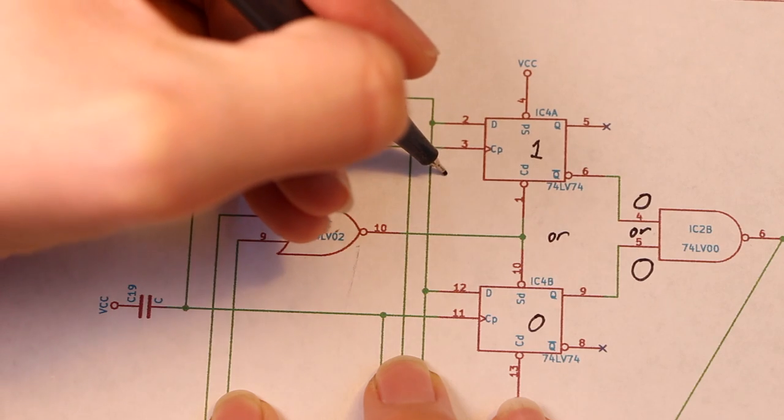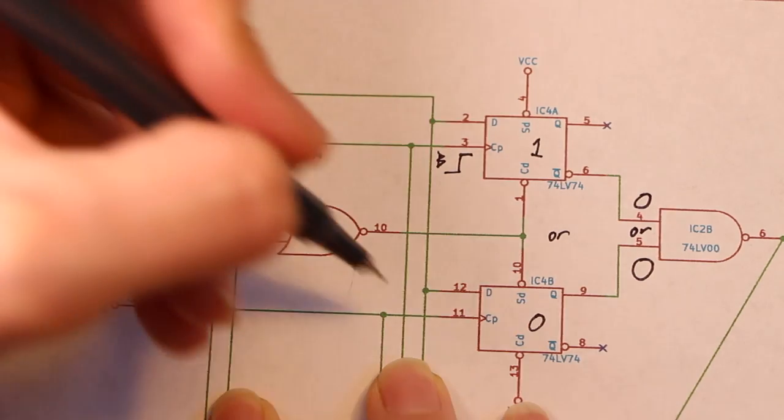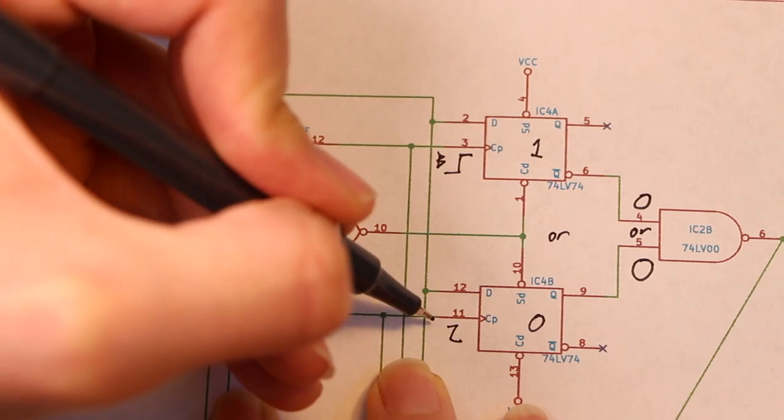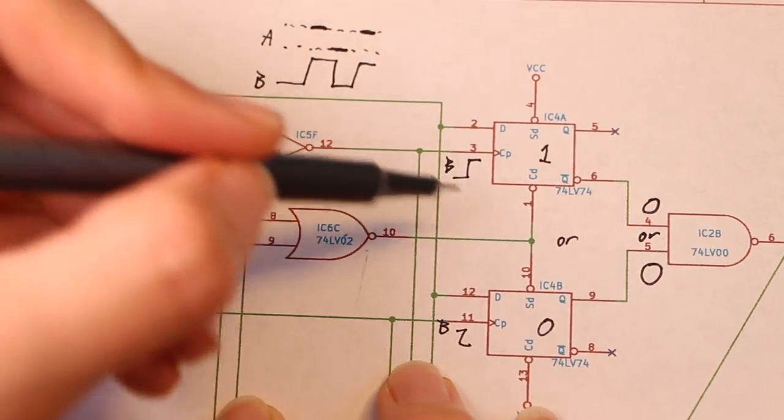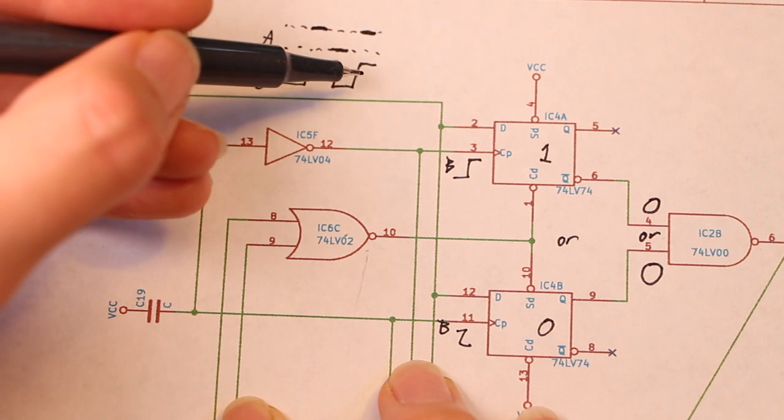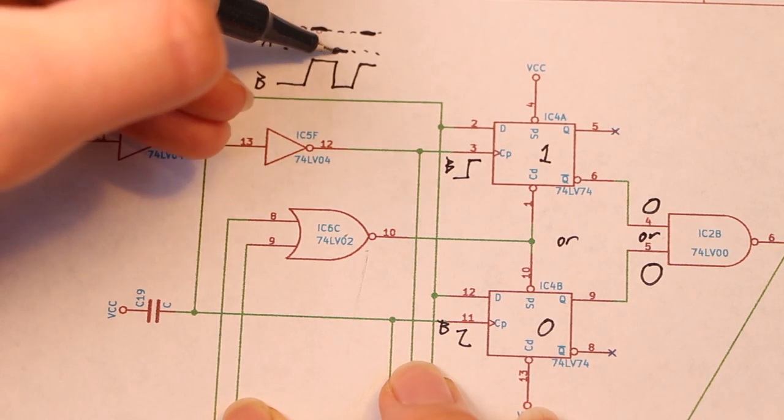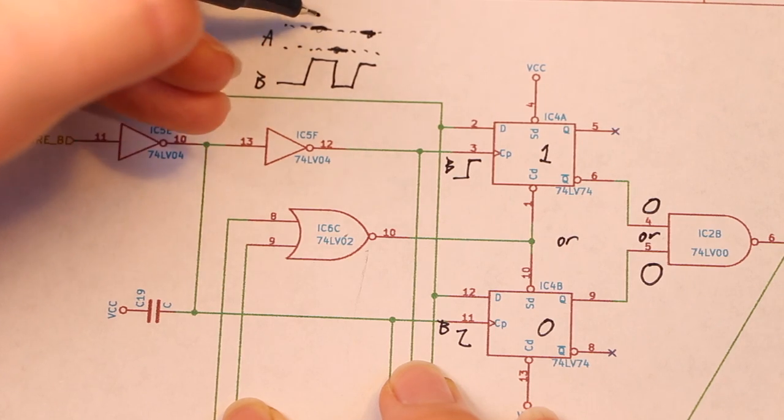This flip-flop is clocked when the B signal goes from 0 to 1 whereas this flip-flop is clocked when the B signal goes from 1 to 0. This circuit gives us a chance to detect upward scrolling on either edge of the quadrature B signal and we're just looking for these kind of ghost outlines of the proper A signal.